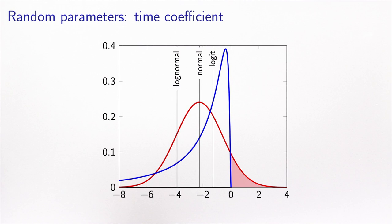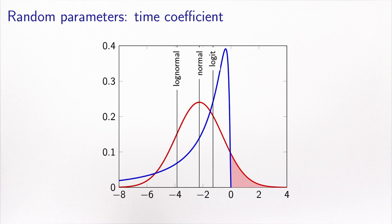Such models are sometimes called latent class models. In the previous video, we investigated a case study where the coefficient of the travel-time parameter in a mode-choice model was assumed to be distributed across the population, and we investigated two continuous distributions: a normal distribution and a log-normal distribution.